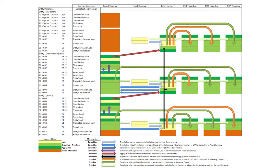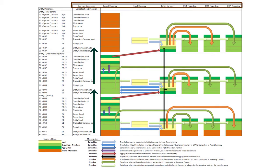The consolidation dimension provides the path for the flow of data from each child entity to its parent. The currency dimension enables conversion of the data so that it can be combined with data from other entities and aggregated to a common parent currency.